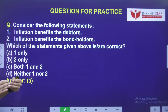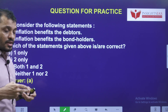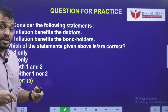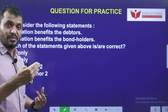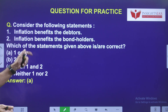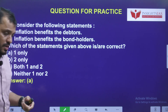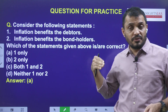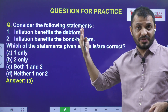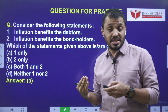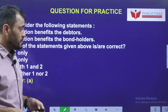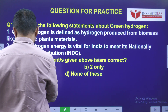From yesterday's video question: inflation benefits the debtor — the person who borrowed money — because when they borrowed, the rupee value was higher, say 100 rupees, but now the rupee value has decreased to 150 rupees, so they effectively pay less debt. Inflation does not benefit the bond holder, because as inflation decreases the rupee value, the value of bonds held in rupees also decreases.